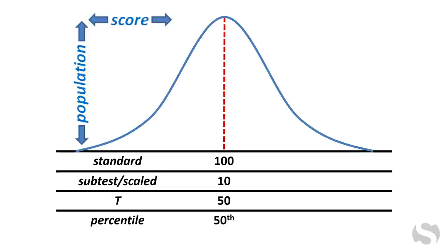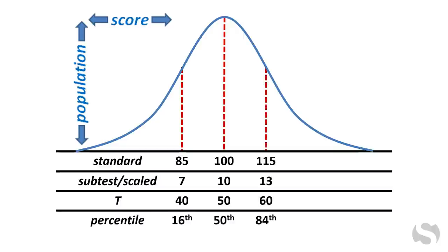Standard scores of 85 or below are uncommonly weak — same for subtest scaled scores of 7 or below, T scores of 40 or below, and percentile scores of 16 or below. Standard scores of 115 or higher are uncommonly strong — same for subtest scaled scores of 13 or higher, T scores of 60 or higher, and percentile scores of 84 or higher.